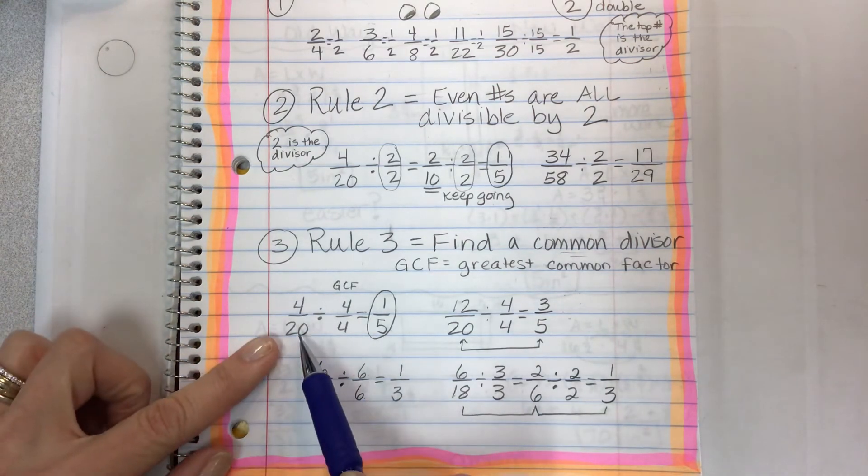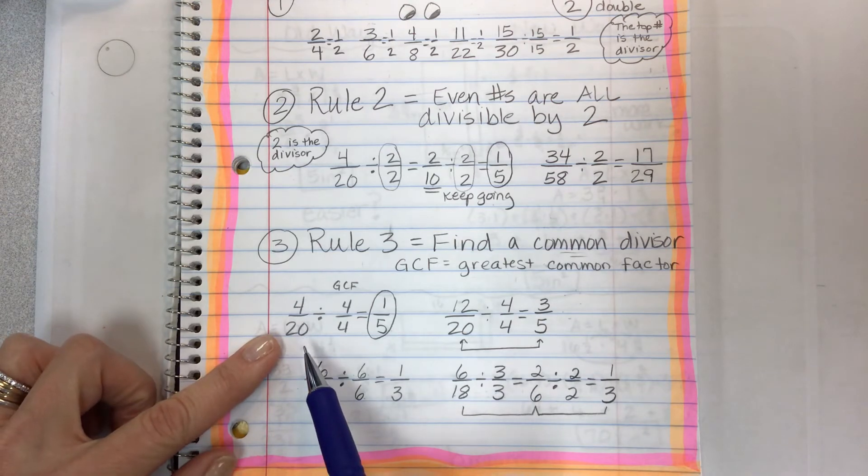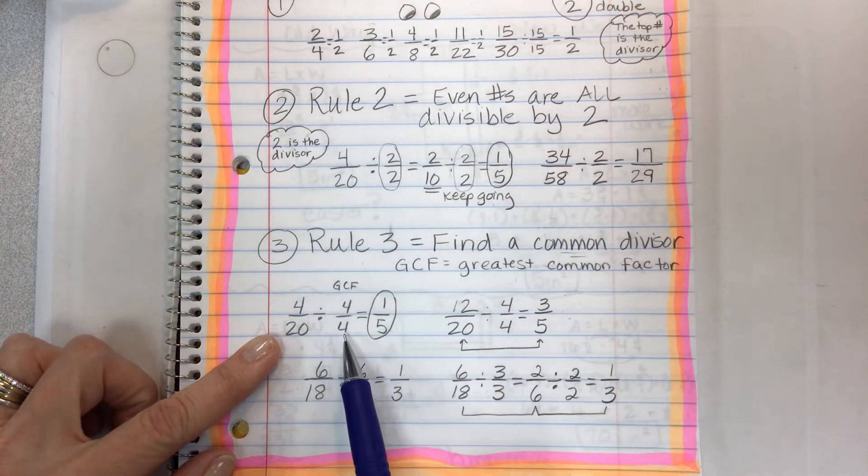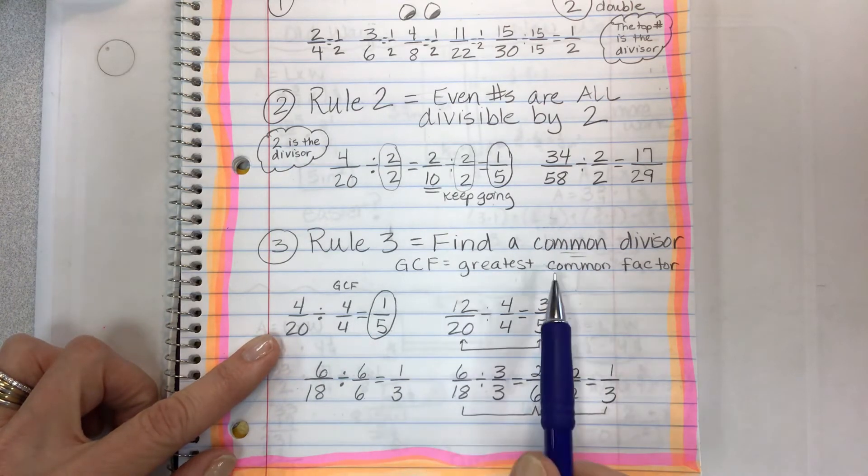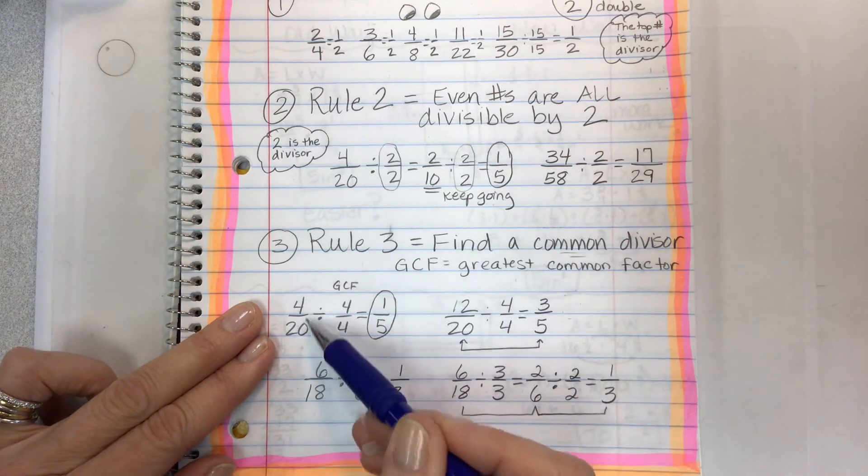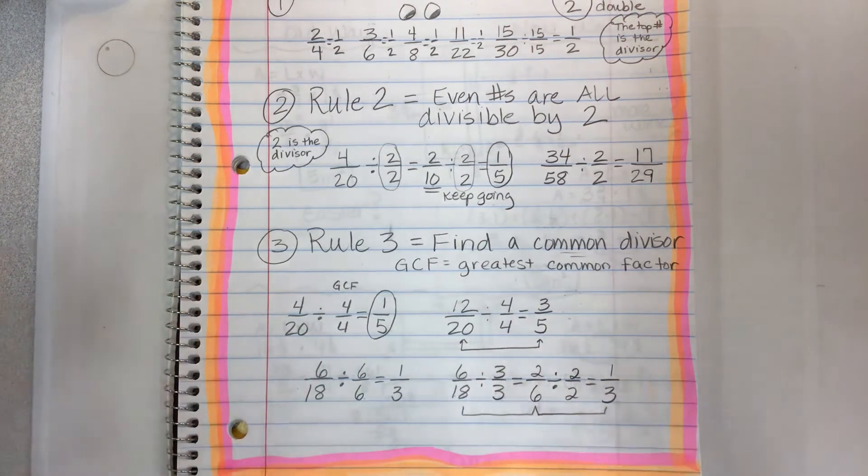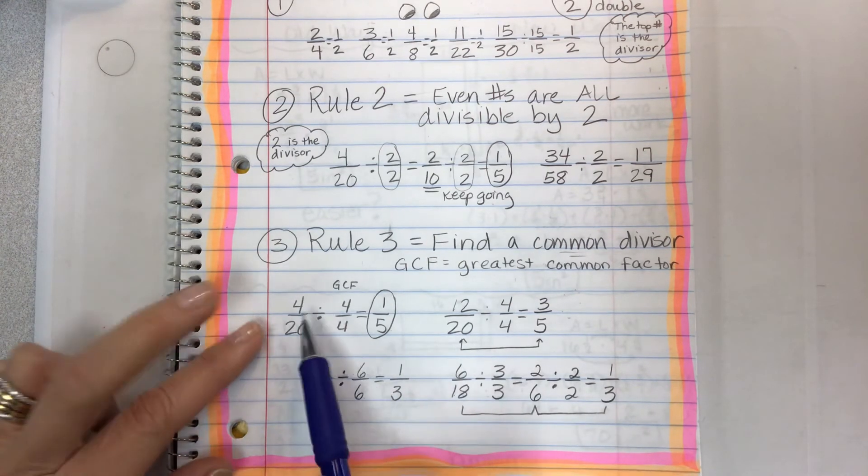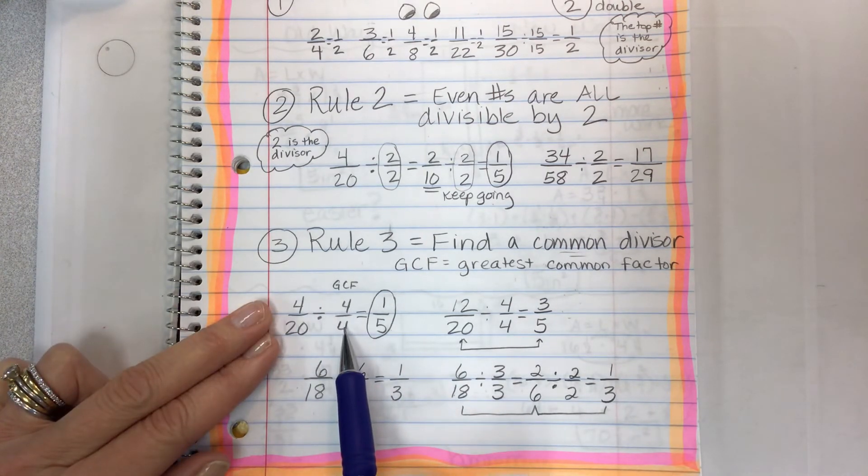Let's take that 4 20ths again. If I recognize that instead of using two, I could use four as a divisor. Four is the greatest common factor. Greatest means it's the biggest number. Common means it works for both. And factor means something that I can multiply to get that number when I'm done. So four is the greatest common factor.